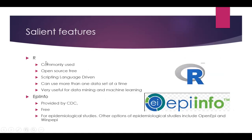R is an open source, free software and one of the commonly used softwares. However, it is scripting language-driven, although there is a package available which can convert R into a menu-driven software. The advantage of R is that we can use more than one dataset at a time, and it is also very useful for data mining and machine learning.